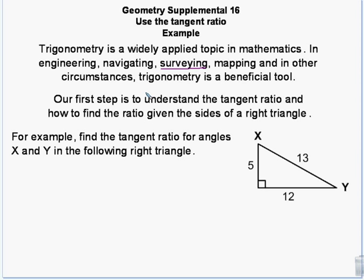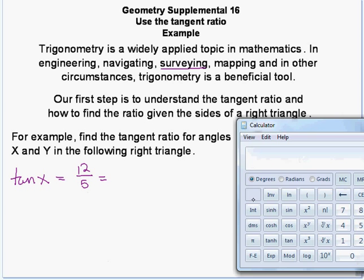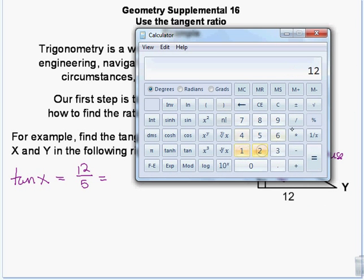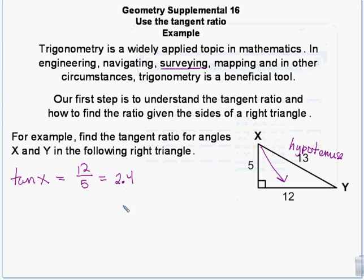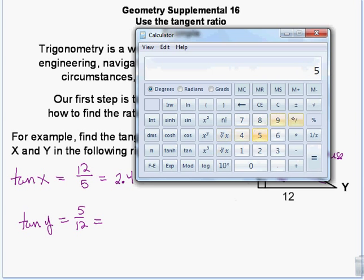To find the tangent of X: 12 is the opposite side. Notice we're not using the hypotenuse here — we use the hypotenuse for sine and cosine, but not for tangent. Tangent is opposite over adjacent, so the tangent of X is 12 over 5, which equals 2.4. For the tangent of Y, the opposite is 5, so we have 5 over 12, which equals 0.416 repeating.